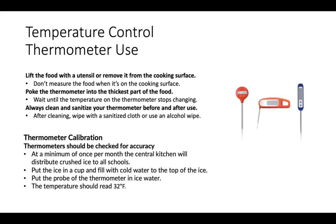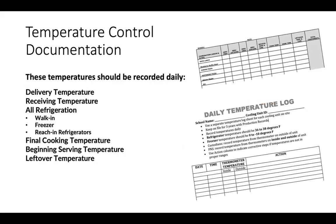Thermometer calibration. Thermometers should be checked often for accuracy. At a minimum of once per month, the central kitchen will distribute crushed ice to all schools. Put the ice in a cup and fill with cold water to the top of the ice. Put the probe of the thermometer into the ice water — the temperature should read around 32 degrees. Documentation. Certain temperatures need to be recorded daily. We do not rely on our memory or what we think the temperature was. Record the delivery temperature, the receiving temperature, all refrigeration such as your walk-in, freezer, or reach-in coolers, final cooking temperatures, the temperature before we begin serving, and temperatures when food is left over.